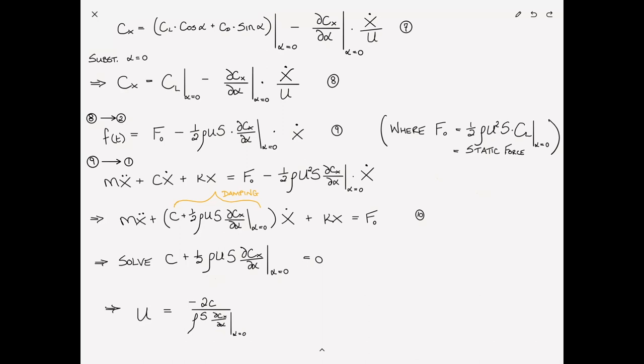Now, you look at this and you say, density is positive, S is positive. This would imply a negative velocity. So, we ask the question of when is dCx/dα less than 0?